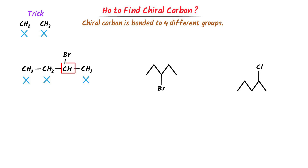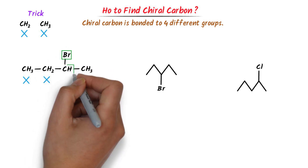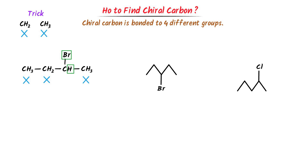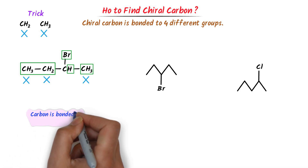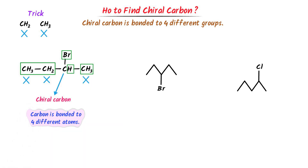Now in case of this carbon, we can see that it is bonded to bromine, it is bonded to hydrogen, it is bonded to this whole thing — CH3CH2 — and it is bonded to this methyl CH3. We can see that this carbon is bonded to four different groups. Hence, it is a chiral carbon. Thus, this organic molecule has one chiral carbon.